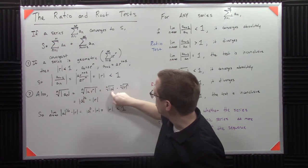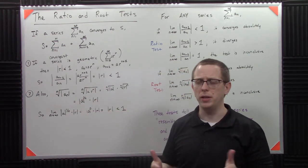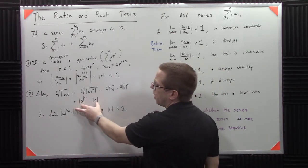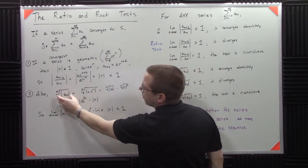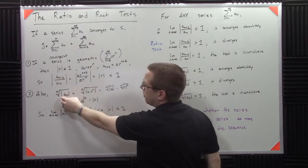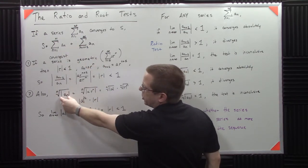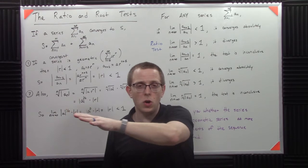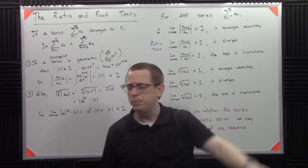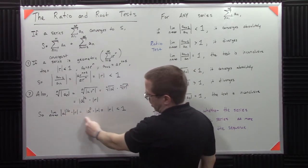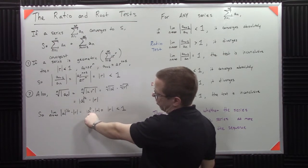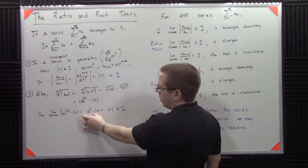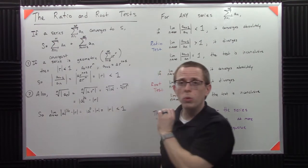And then you have this magnitude of A to the 1 over N. For this geometric sequence, if I take n all the way out to infinity, if I start looking at terms as they go to infinity, that's just going to become 0, A to the 0, because 1 over N goes to 0. So then it becomes that magnitude of R, which is less than 1.